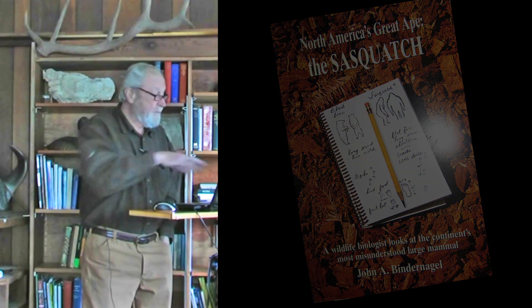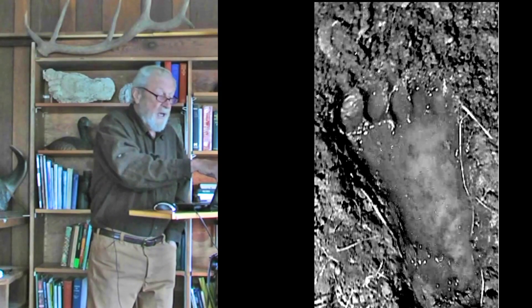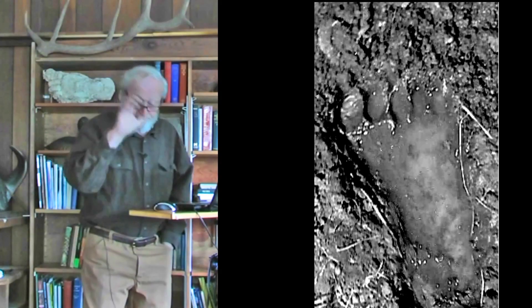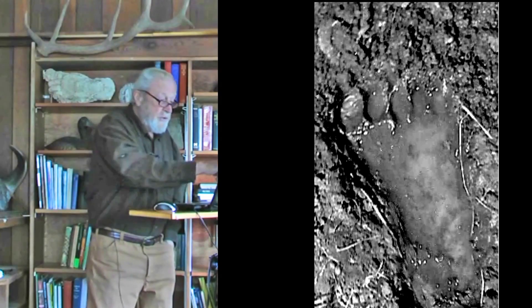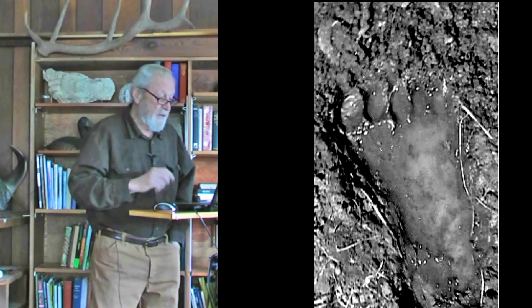There are some problems with tracks, and that's why we make these casts. Tracks can be quite difficult to photograph. This one actually turned out quite well — the human foot in there for scale is quite helpful. This one is quite good because the toes are kind of curled and pointed downwards, and there's a nice round tip showing there in the mud.